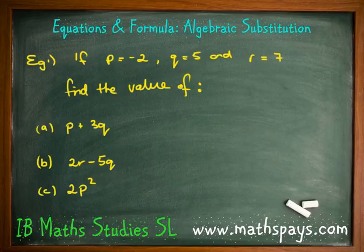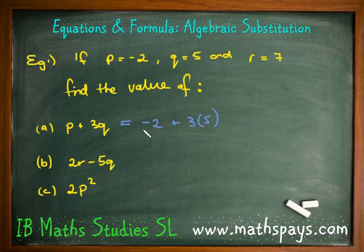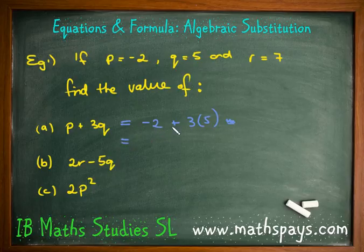Welcome back, guys. Hopefully you went okay. So remember, for each of these three questions we must show one line of working. For example, we have negative 2 plus 3 lots of 5. You can put the negative 2 in brackets if you wish — there's no number at the front so it doesn't make much difference. If I put this into my calculator, we've got negative 2 plus 15, and 15 minus 2 is in fact 13.